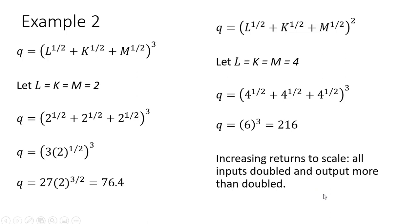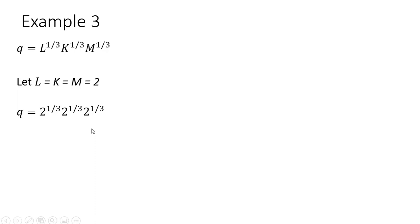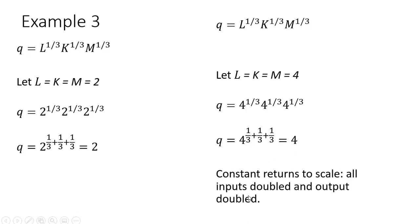Example 3. We have a Cobb-Douglas production function. We'll let L, K, and M equal 2, plug those values in, and simplify. We get 2 raised to the 1/3 + 1/3 + 1/3 power, which is just 2, so output is 2. If we double all the inputs, we get an answer of 4 — so here we have constant returns to scale: all inputs doubled and output exactly doubled.